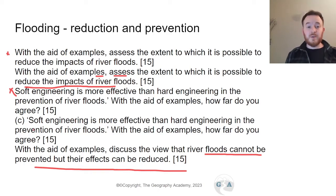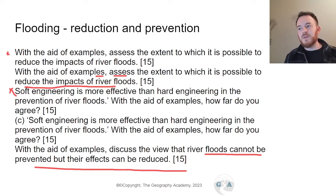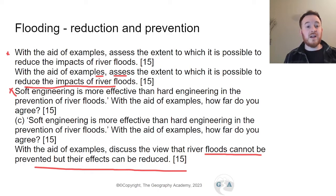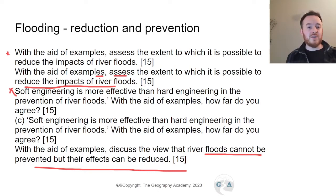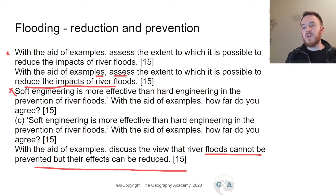Across different years and exam sittings, these essays are all asking for the same thing. Most students divide the answer into hard and soft engineering with case study examples. I'd recommend a third paragraph on forecast and warning systems — measurement techniques, warning systems, and flood interval levels. Ideally, bring facts and statistics about all three categories — soft engineering, hard engineering, and forecasting — across both case studies.